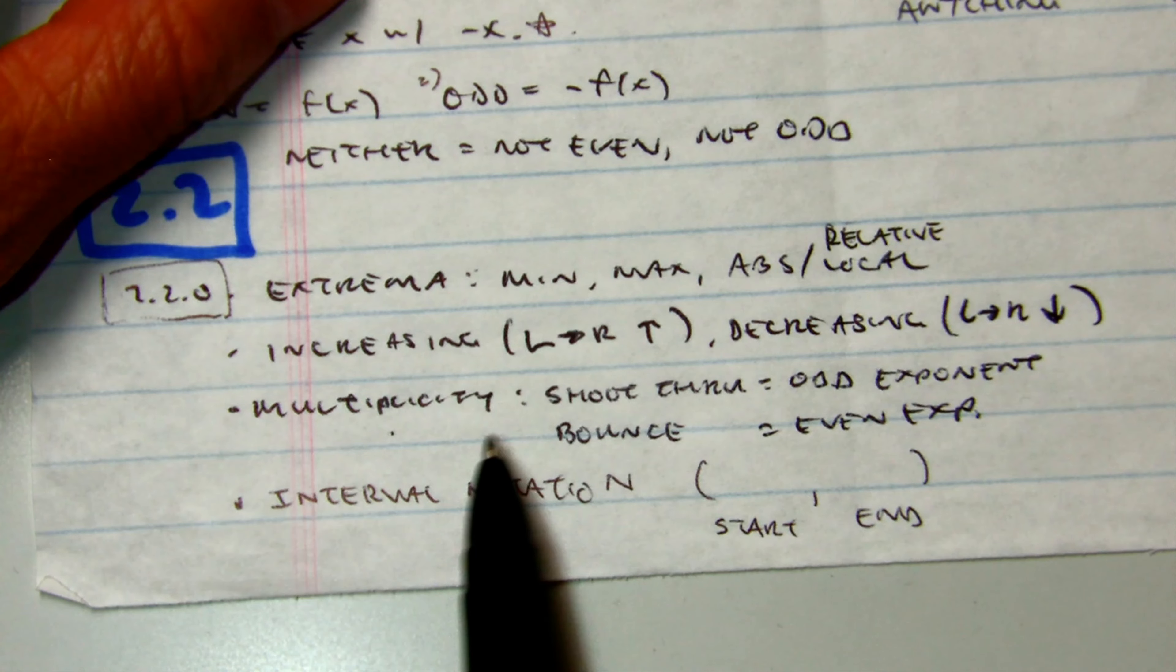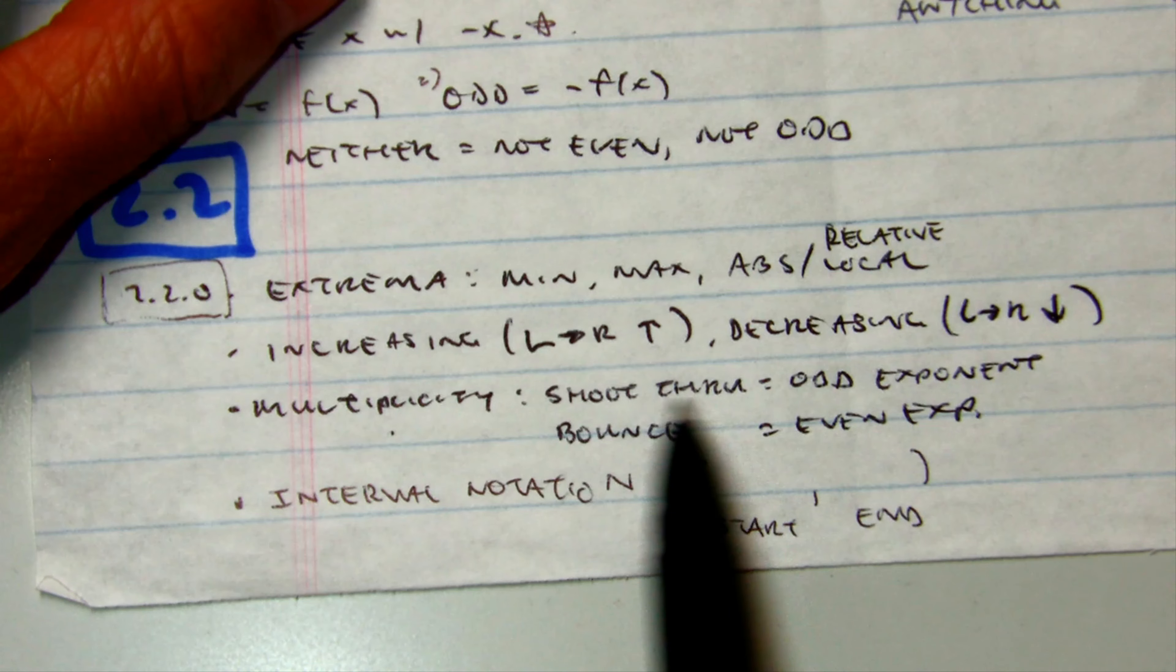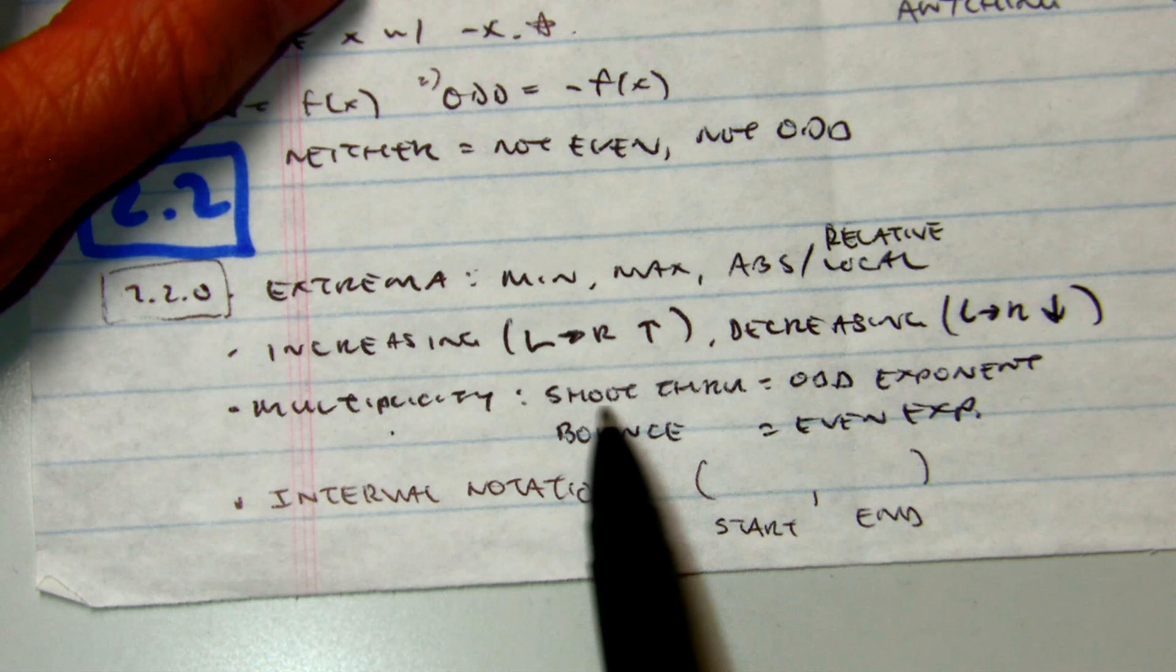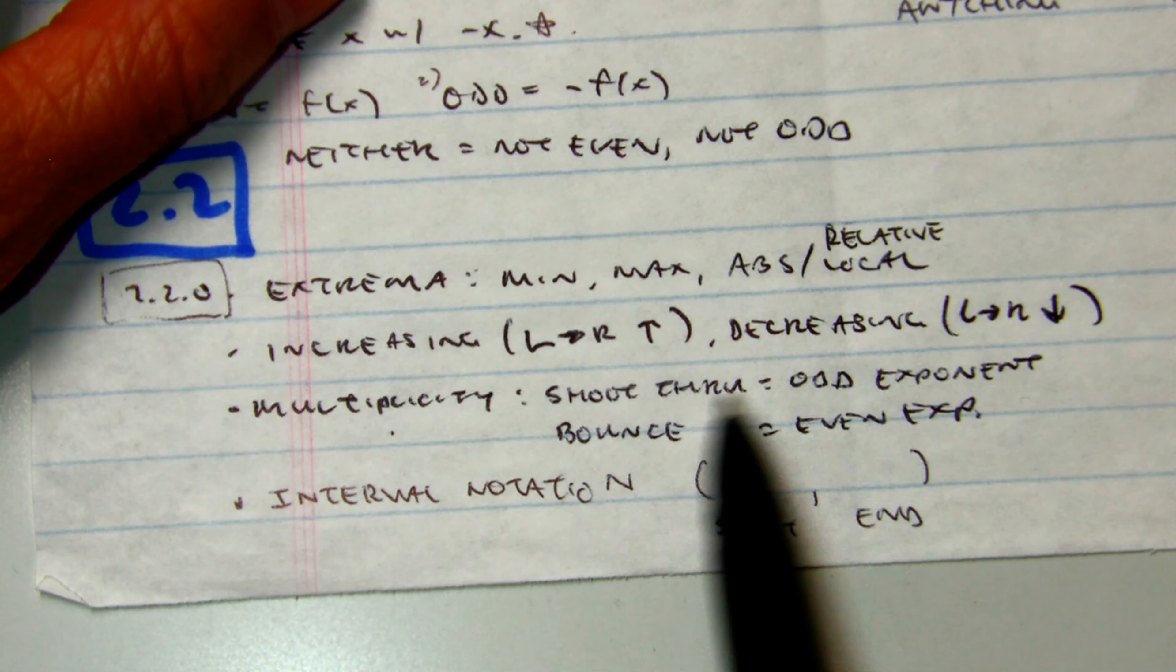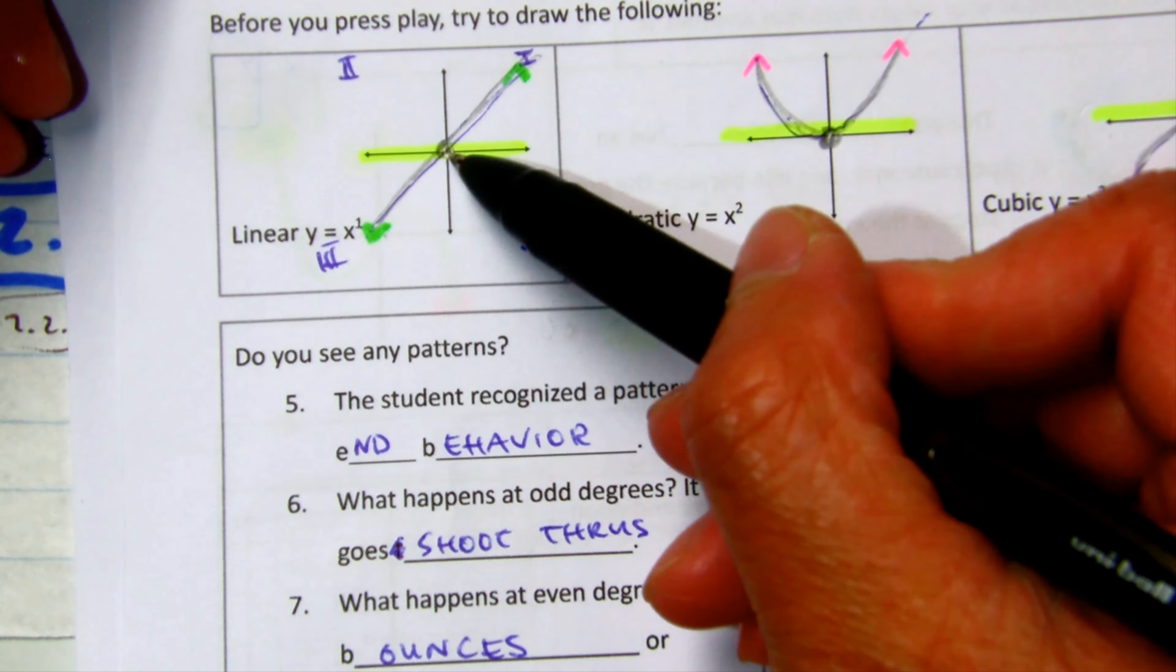Multiplicity refers to shoot-throughs. If it's shooting through the x-axis, it counts as one real zero. An example of that is your linears. This is a shoot-through. This counts as one real zero.